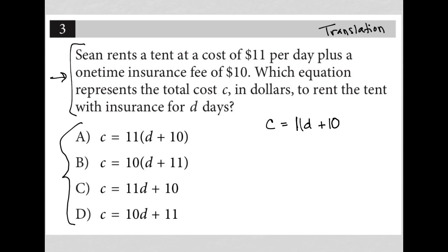The question goes on to say, which equation represents the total cost C in dollars to rent the tent with insurance for D days, which has to be this, right? This is our translation, our cost. We're paying $11 per day plus our $10. So our answer here must be choice C.